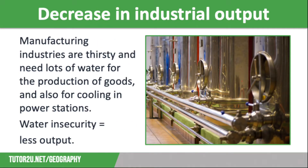Our next impact of water insecurity is industrial output. Many manufacturing industries are thirsty and use lots of water in the production of goods like steel, textiles, and industrial chemicals. Water is also important in energy production, especially in the generation of hydroelectric power, but also as part of the cooling process in coal, gas, and nuclear power stations.